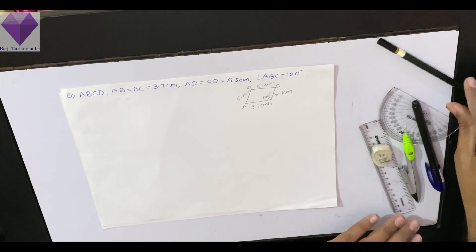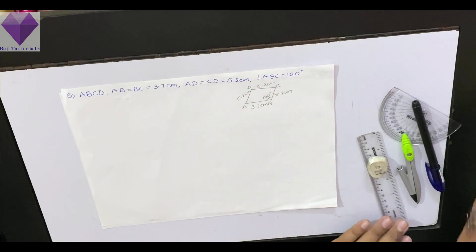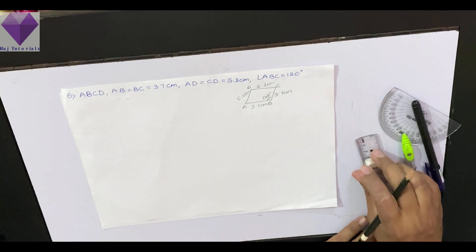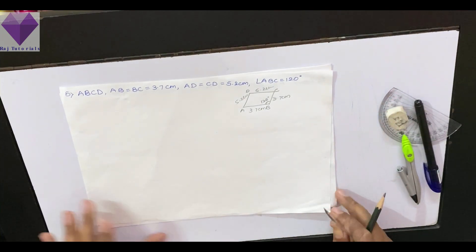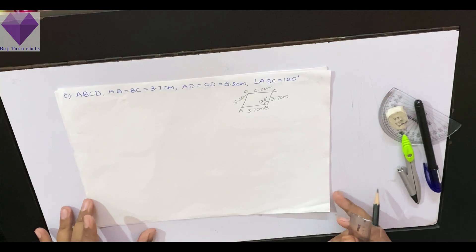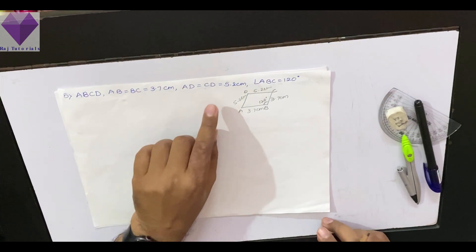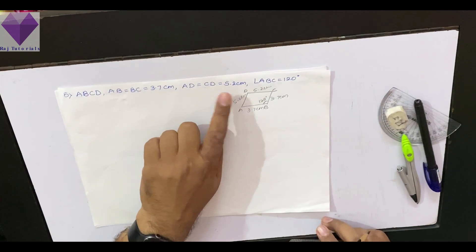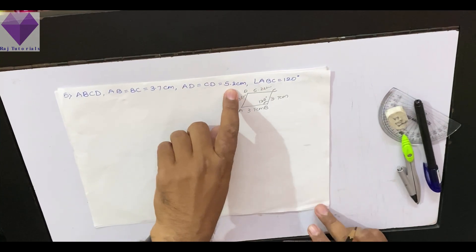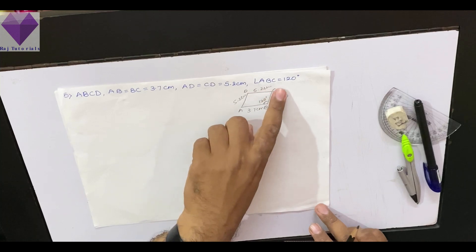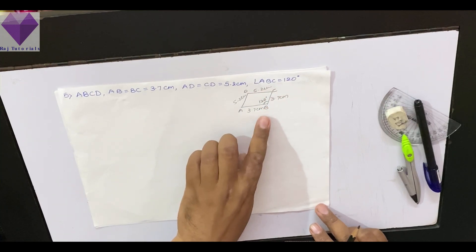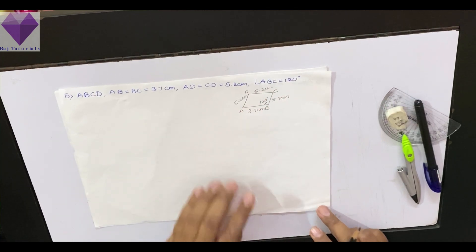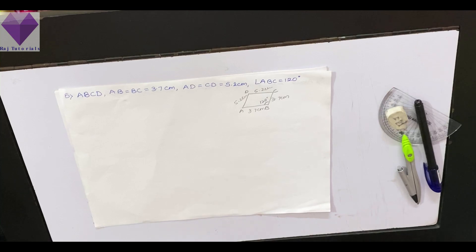Hello students. Today we are going to make a quadrilateral ABCD where AB equal to BC equal to 3.7, AD equal to CD equal to 5.2, and angle ABC equal to 120 degrees. This quadrilateral is given 4 sides and 1 angle.